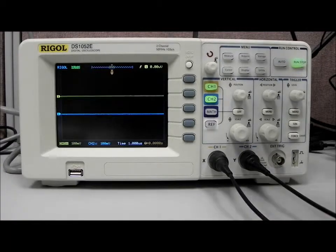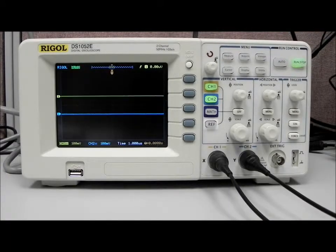Today we're going to walk through some of the features of the DS-1000 series of Rigol oscilloscopes. In this particular case we have the 1052E, which is a two-channel, 50 megahertz, one gigasample per second digital oscilloscope.